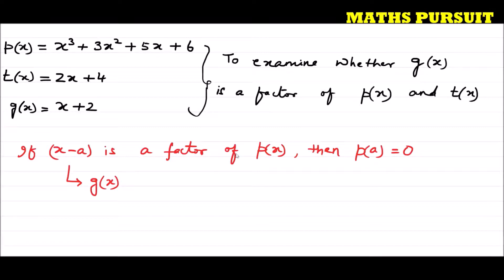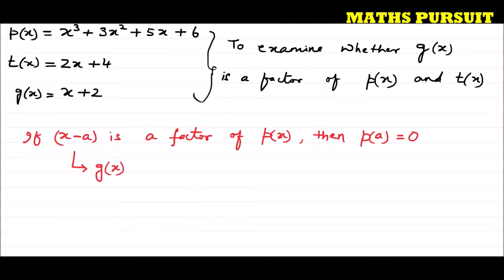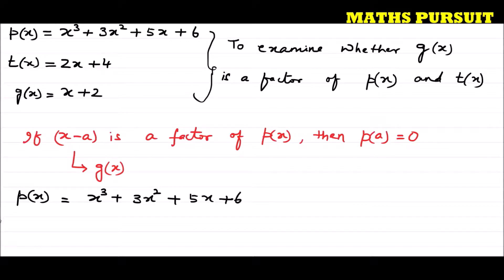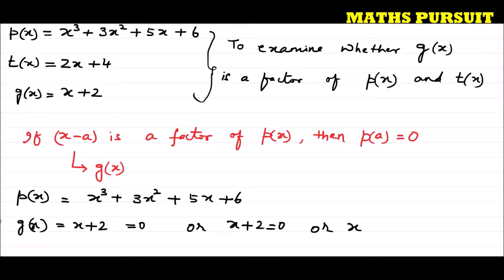We have p(x) = x³ + 3x² + 5x + 6, and g(x) = x + 2. We need to find the zero of g(x) to determine the value at which we test the factor. So g(x) = x + 2 = 0, which gives x = −2. We will now put the value x = −2 into p(x) and see if we get 0.